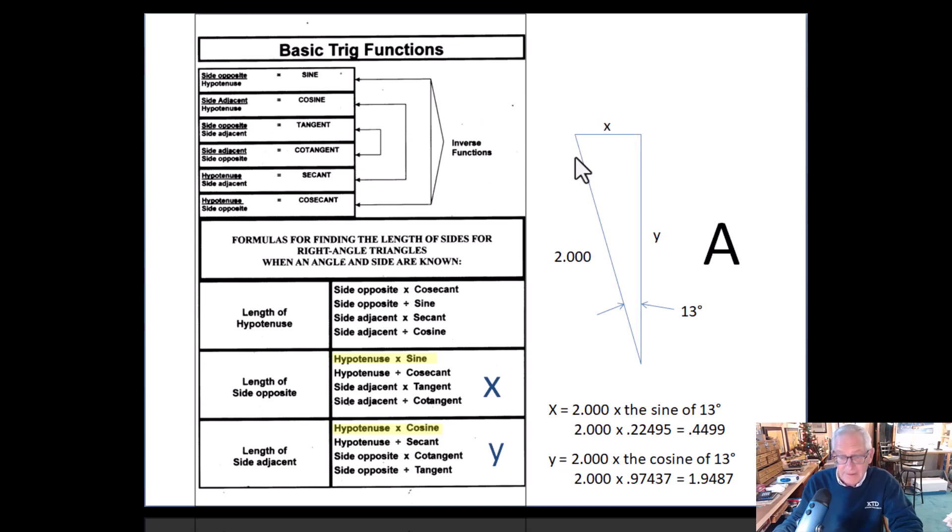Then to solve for Y, again we do know two things: the hypotenuse and the angle. So now we're just going to take the hypotenuse times the cosine: two inches times the cosine of 13 degrees, which is 0.97437, equals one inch nine hundred forty-eight thousandths. So now we've solved that triangle.